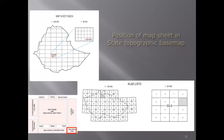Then comes the position of the map sheet in the state topographic map. We divide the whole region into a number of sheets, then subsheets. You look at the map of the country, then the province, then the district, and within that district you locate your map. It is always good to mention the location, and it is available on the topographic sheet — you just redraw it and it is normally present in the lower right-hand corner.